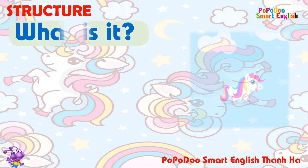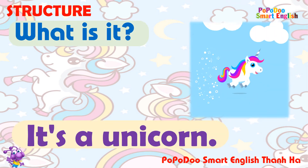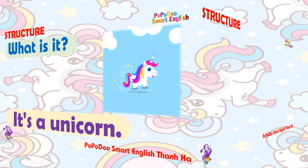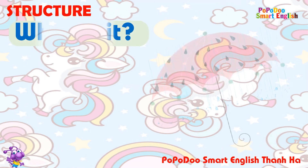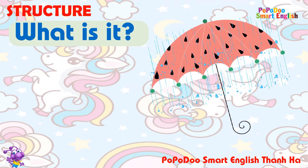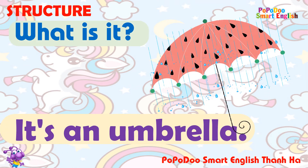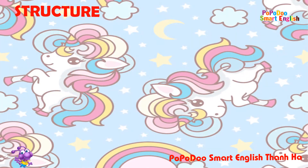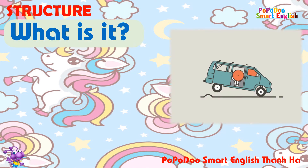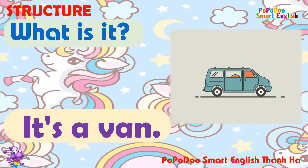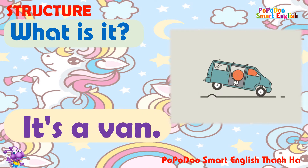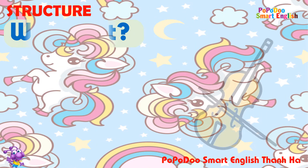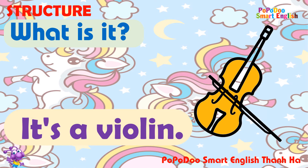What is it? It's a unicorn. What is it? It's an umbrella. What is it? It's a van. What is it? It's a violin.